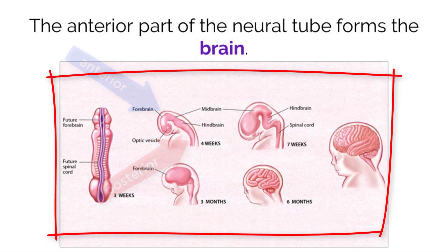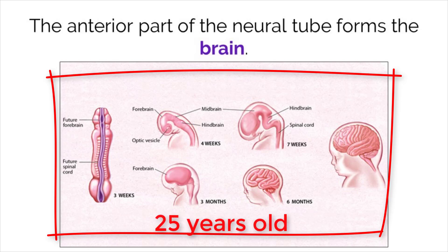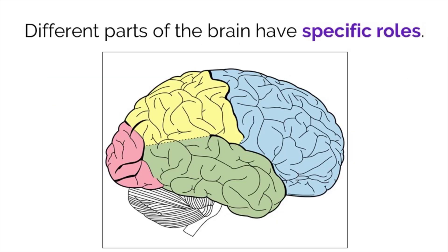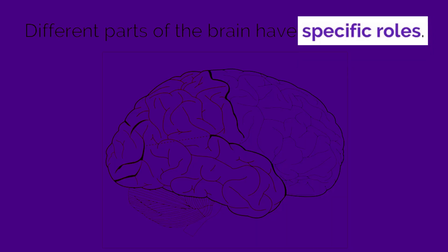This image shows the gradual development of the brain in early stages. Interestingly, the brain stops developing around 25 years old, which is a long, drawn-out process that happens in humans, but not in other primates. In its developed form, different parts of the brain have different functions.